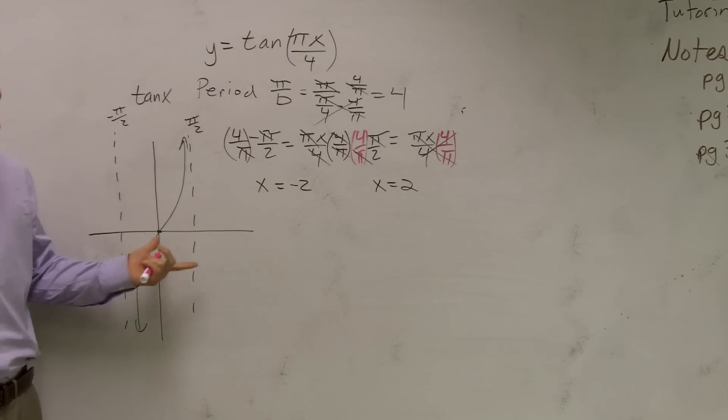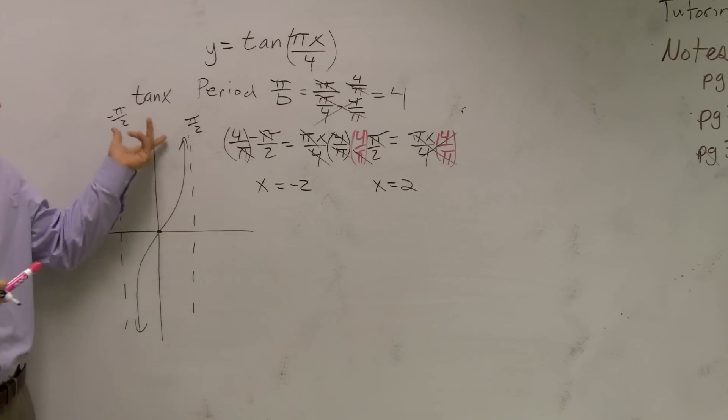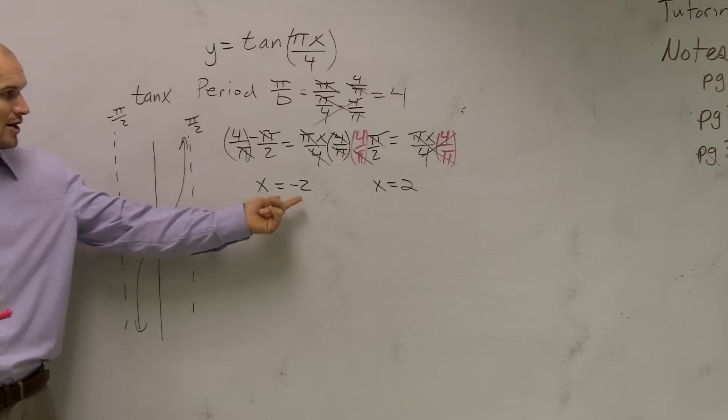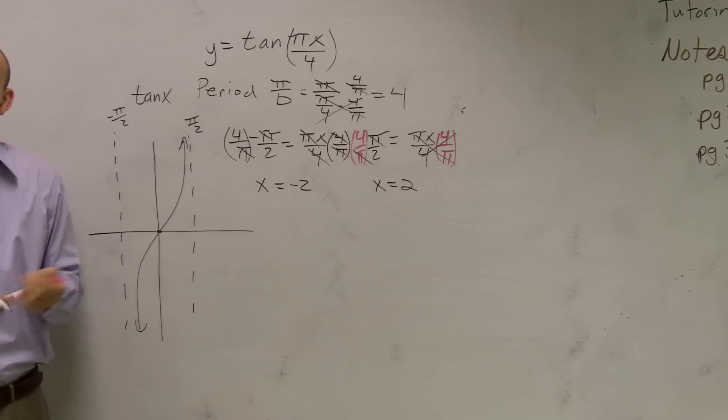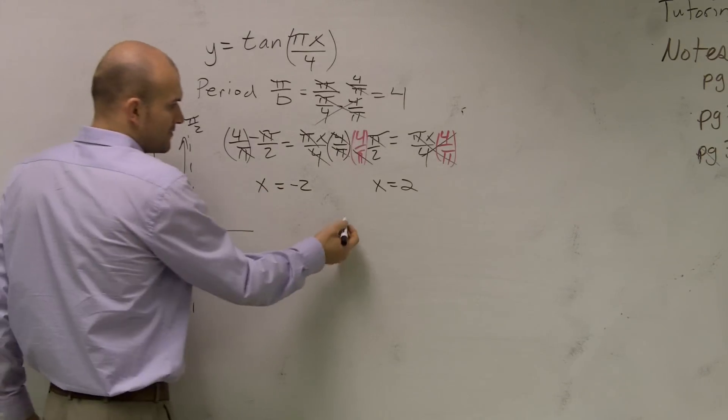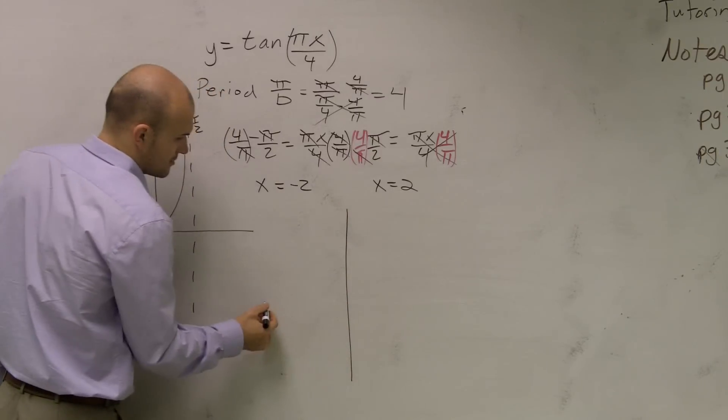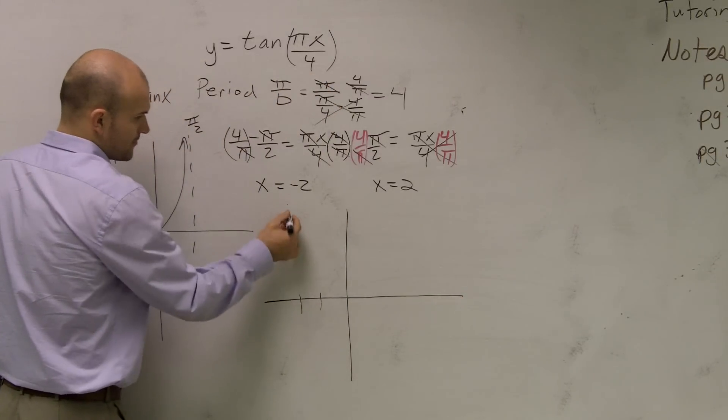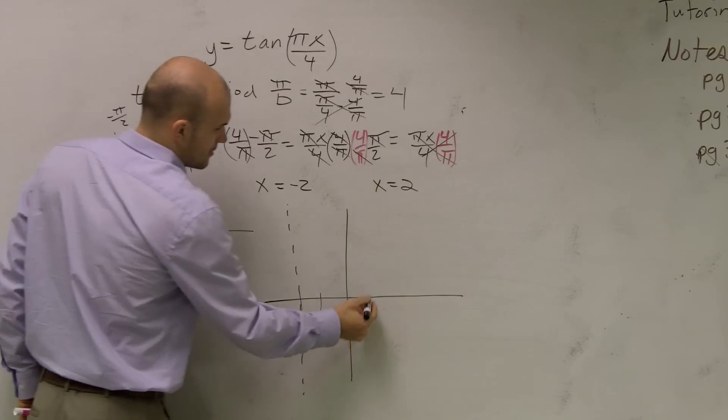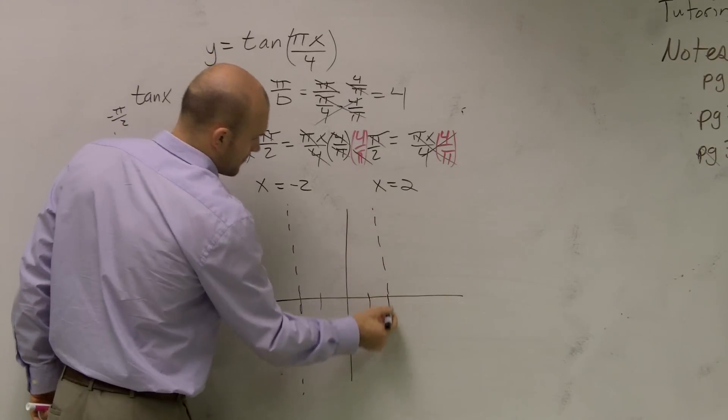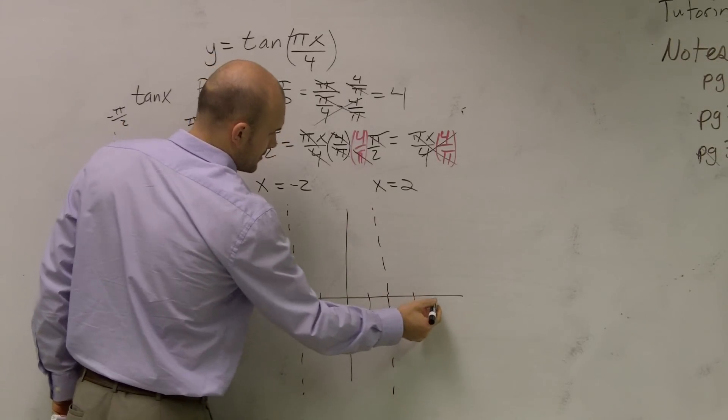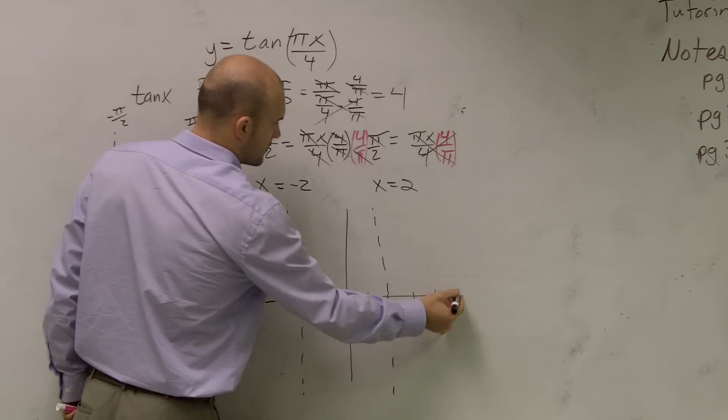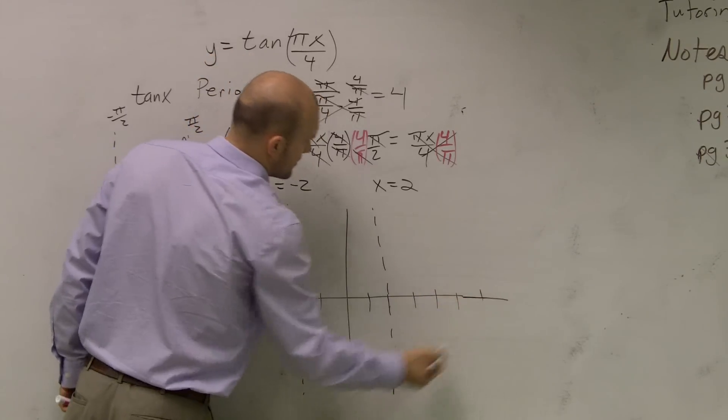Make sure you draw your own graph. The parent graph is in terms of π, but our new endpoints aren't in terms of π. So let's create a graph not in terms of π. Negative 1, negative 2, 1, 2, 3, 4, 5...